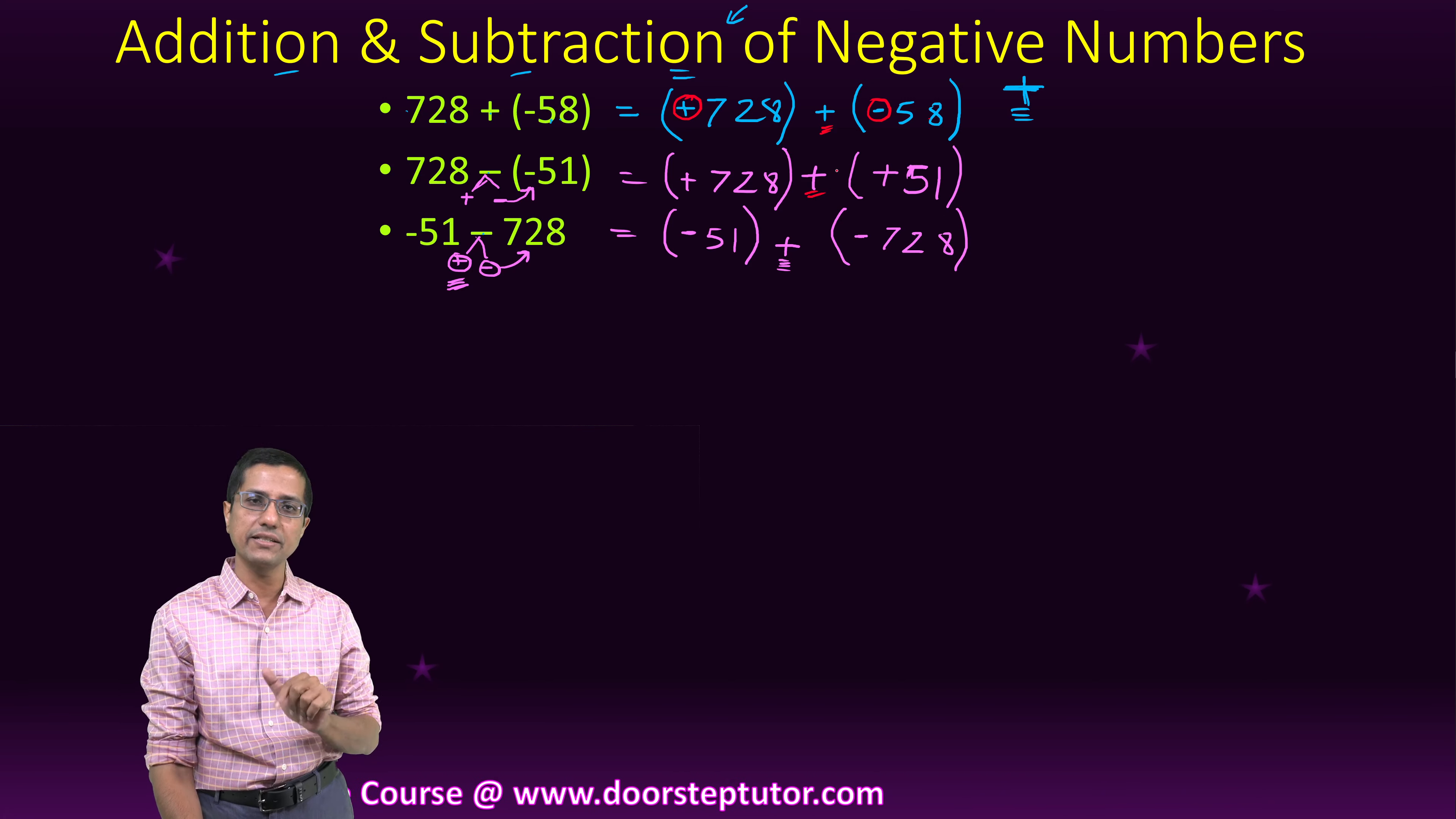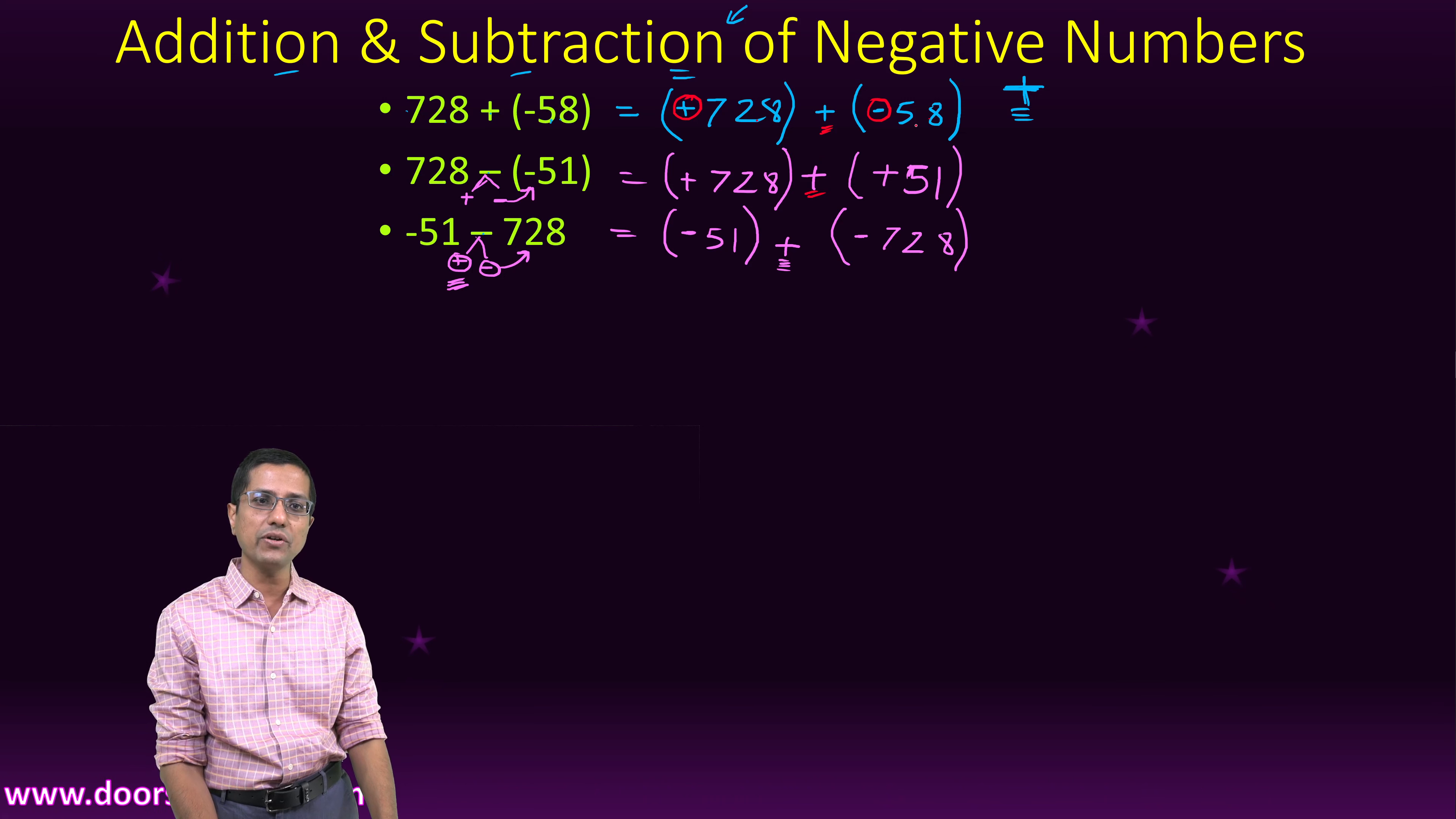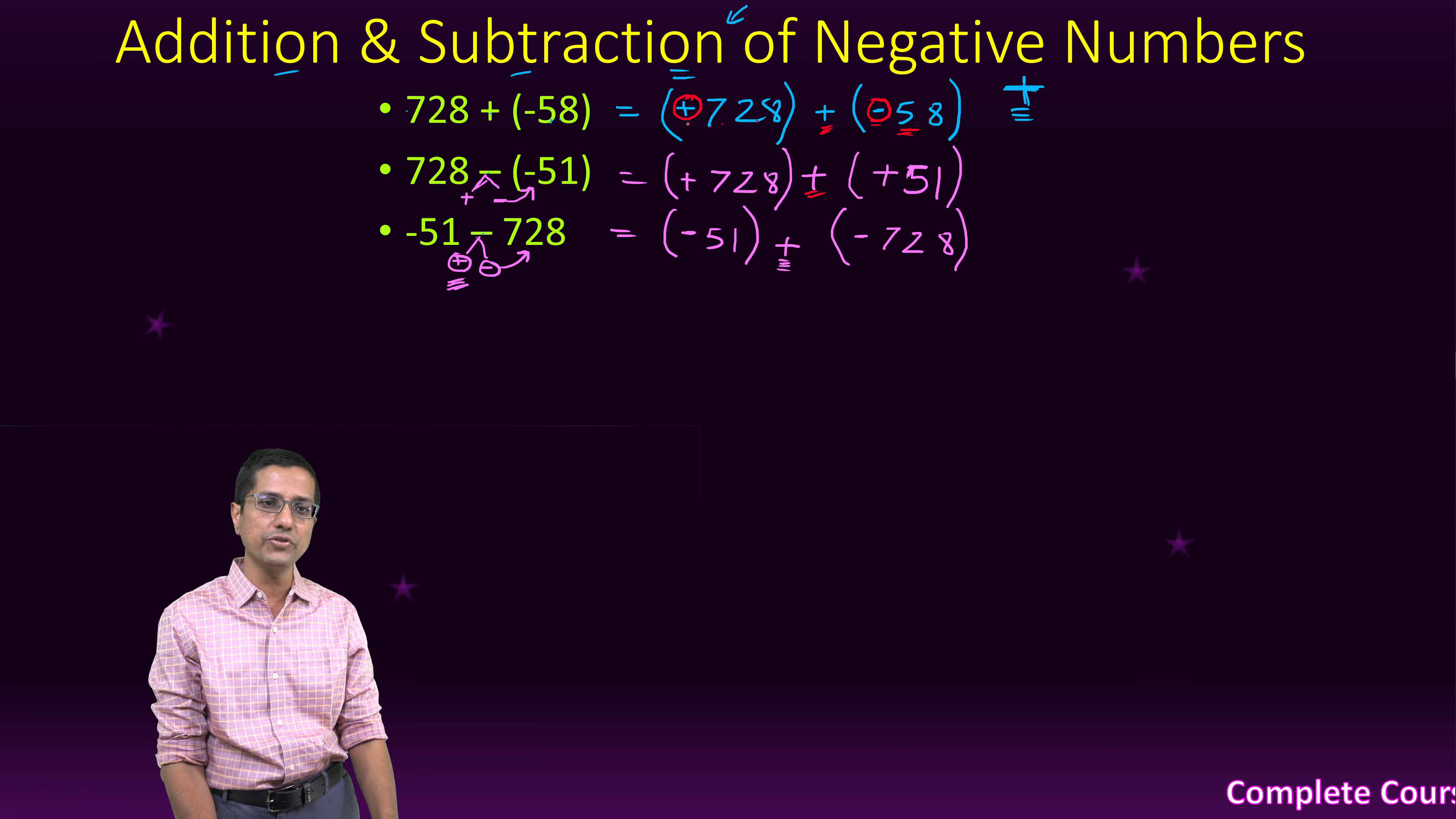That is first step we have done. Now the next step is to look at the signs of the two operands. If they have opposite signs, as is the case here, 728 and minus 58, they have opposite signs,